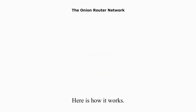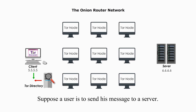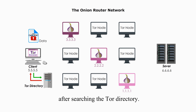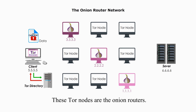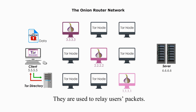Here is how it works. Suppose a user is to send his message to a server. First, the user gets three random Tor nodes after searching the Tor directory. These Tor nodes are the onion routers. The Tor network consists of thousands of onion routers provided by volunteers all over the world.